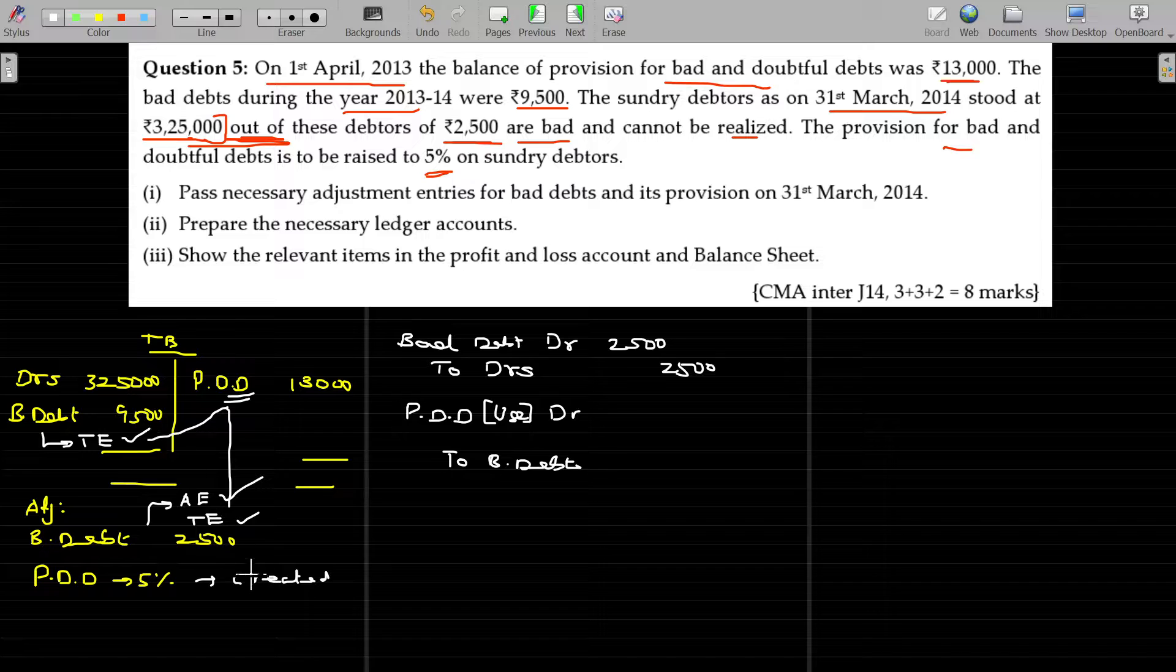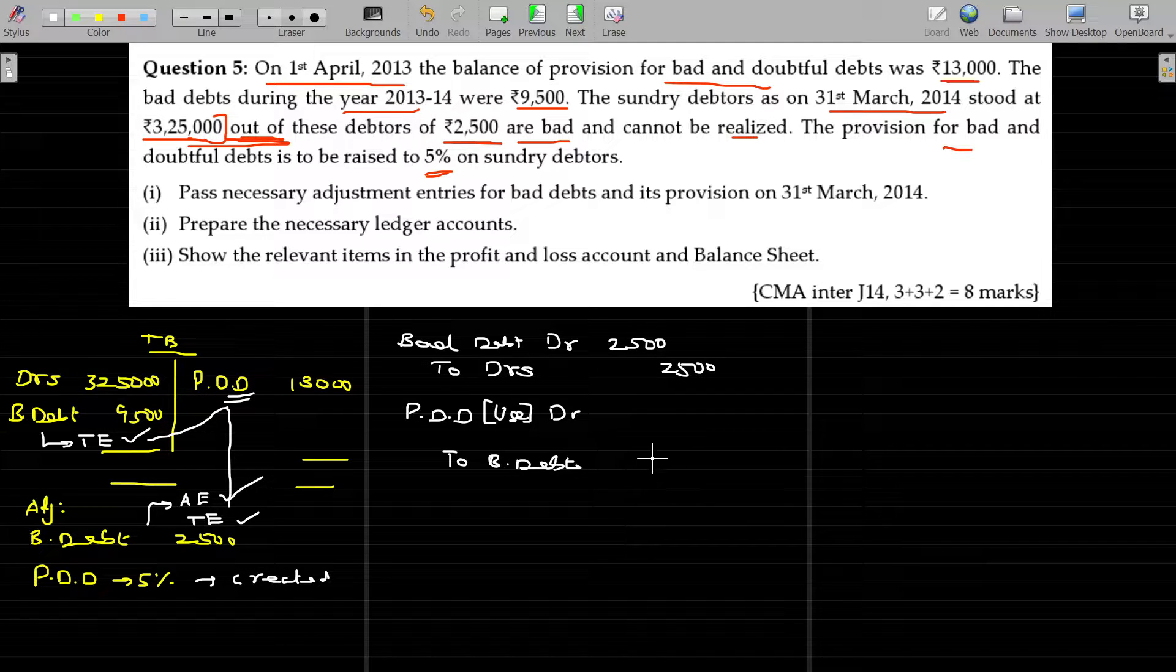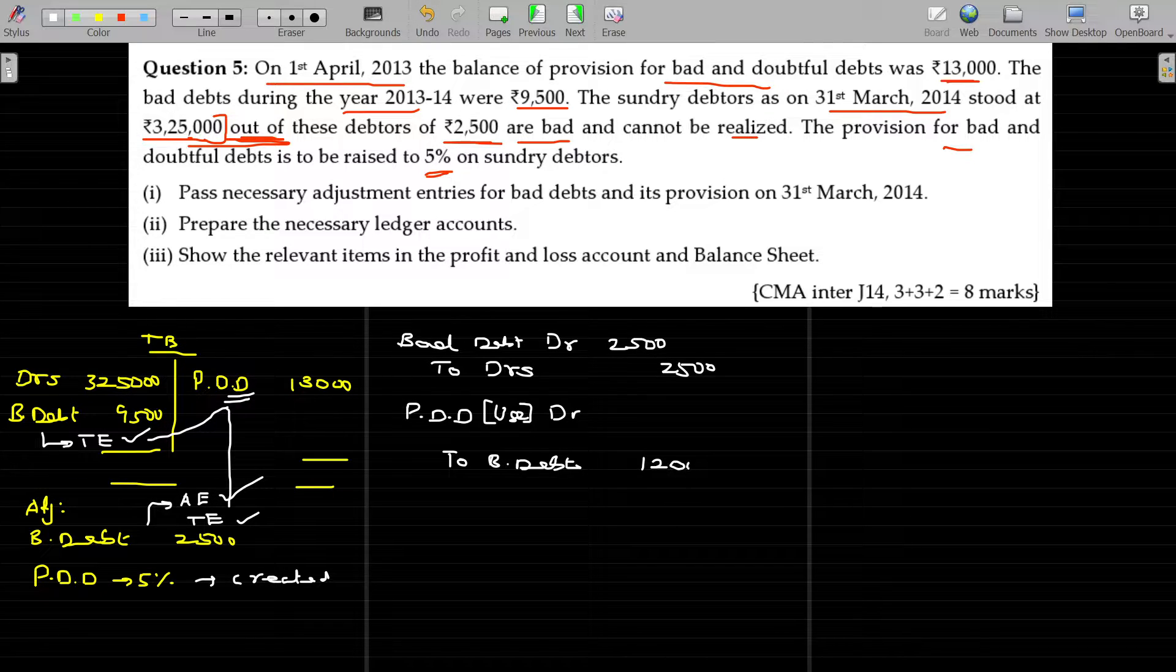The value in bad debt being 9,500 plus 2,500, 12,000 rupees, 12,000 rupees.